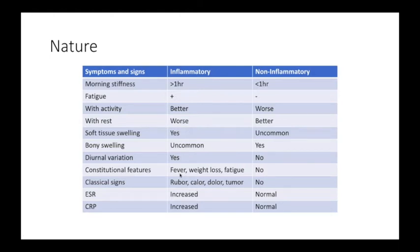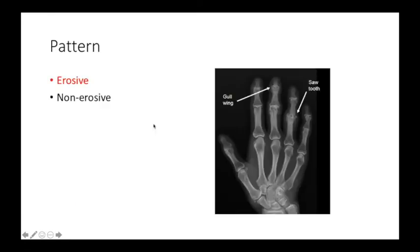There would be the classical signs of rubor, calor, dolor, and tumor. You would find a raised ESR or CRP. None of these features would be seen in the non-inflammatory picture, so on a historical background it is easy to determine whether the arthritis is inflammatory or non-inflammatory.